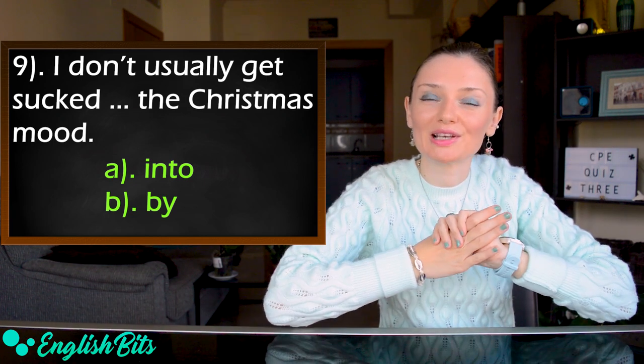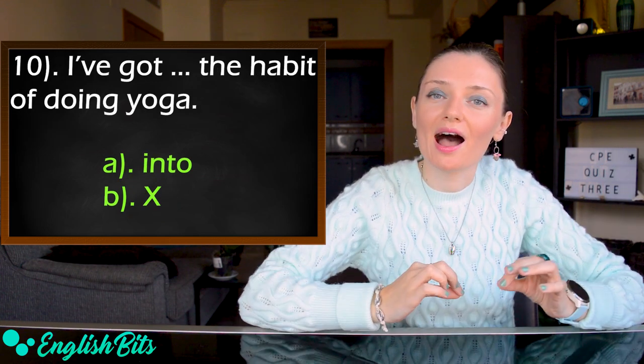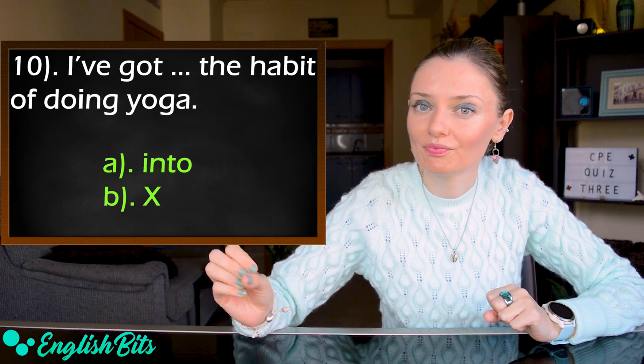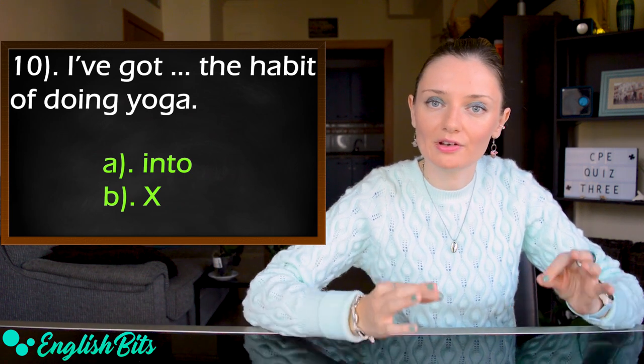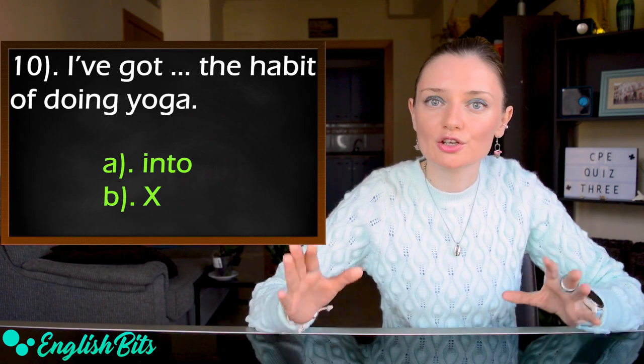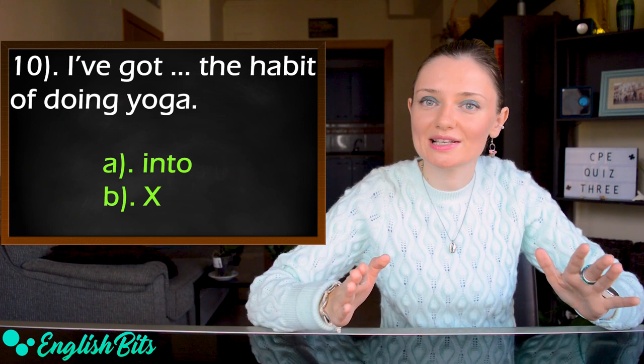And last but not least, number 10. Option A, I've got into the habit of doing yoga. And option B, I've got the habit of doing yoga without a preposition. Choose A or B and write it down.